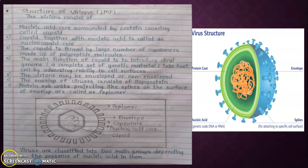The capsid is formed by large numbers of capsomeres made up of polypeptide molecules. The protein coat is available here, you can see in the picture. The main function of capsid is to introduce viral genome or complete set of genetic material into the host cell by absorbing readily to cell surfaces. The virus may be enveloped or non-enveloped. The envelope of virus consists of lipoproteins. Protein subunits projecting like spikes on the surface of envelope are called peplomers.